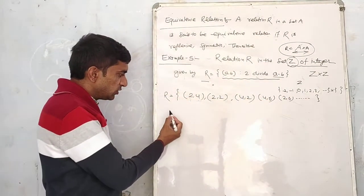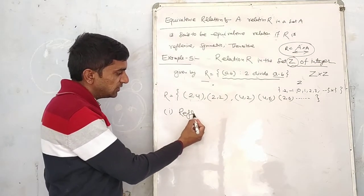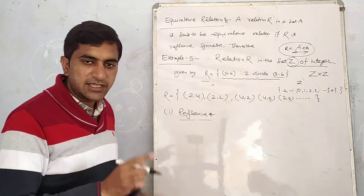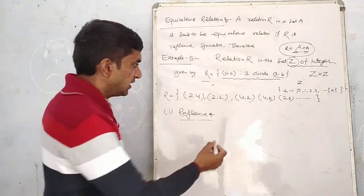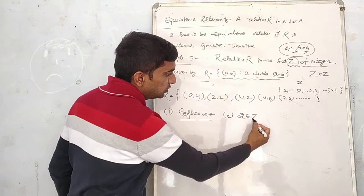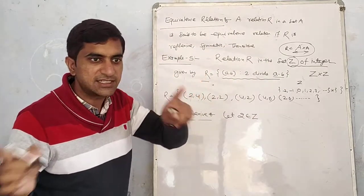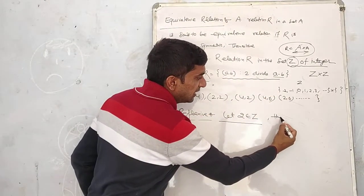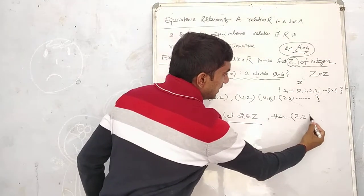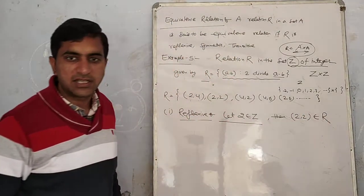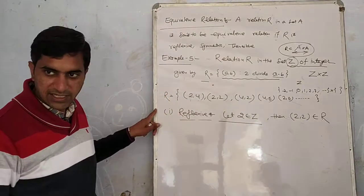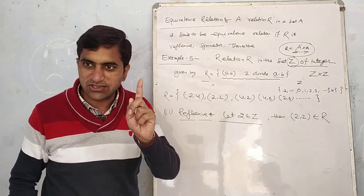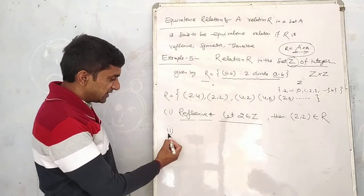Because I wanted to check if it's reflexive. Let's take an element, say 2 belongs to Z. If an element belongs to Z, what does the relation need? What is reflexive? What is the reflexive property?